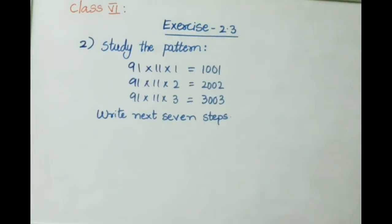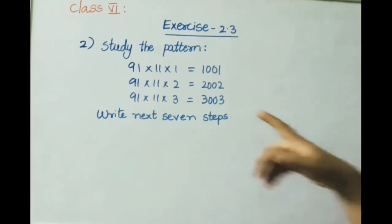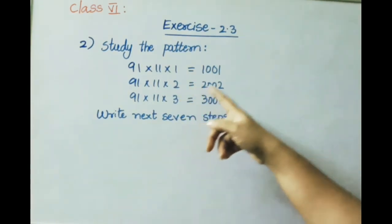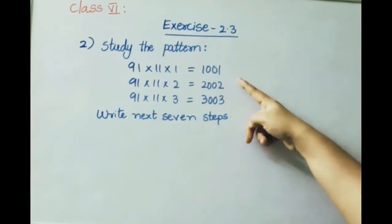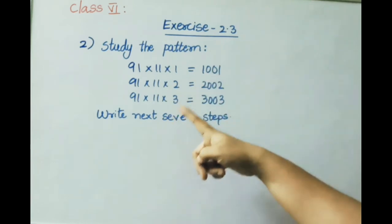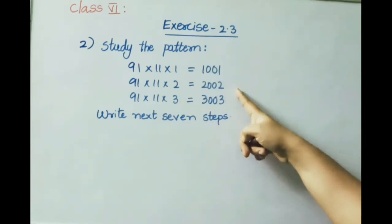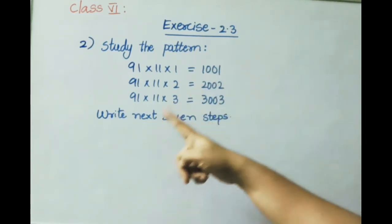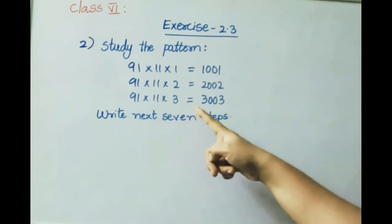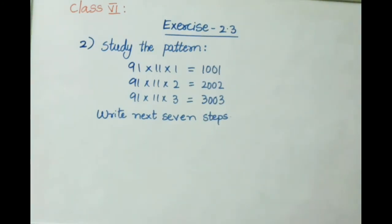Now the second sum: Study the pattern. 91 into 11 into 1 equals 1001. 91 into 11 into 2 equals 2002. 91 into 11 into 3 equals 3003. We need to write the next 7 steps by observing the pattern without doing actual calculation.